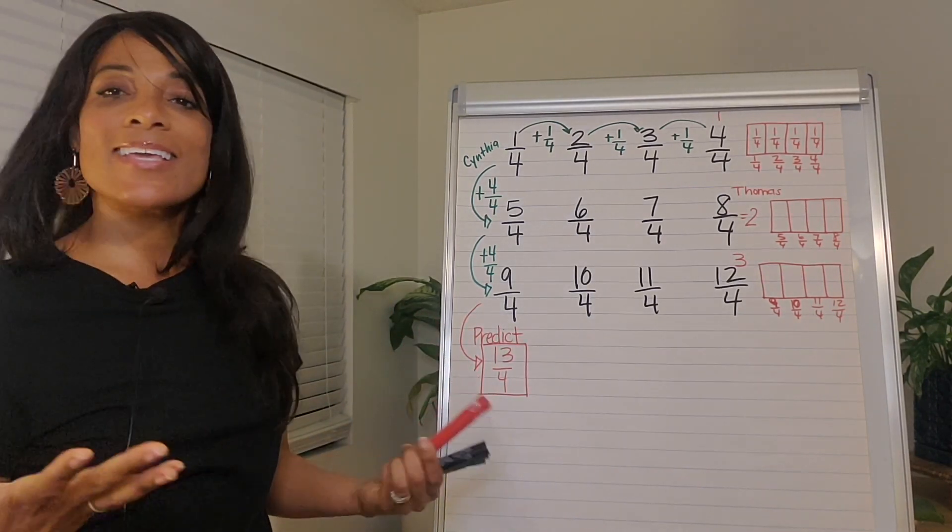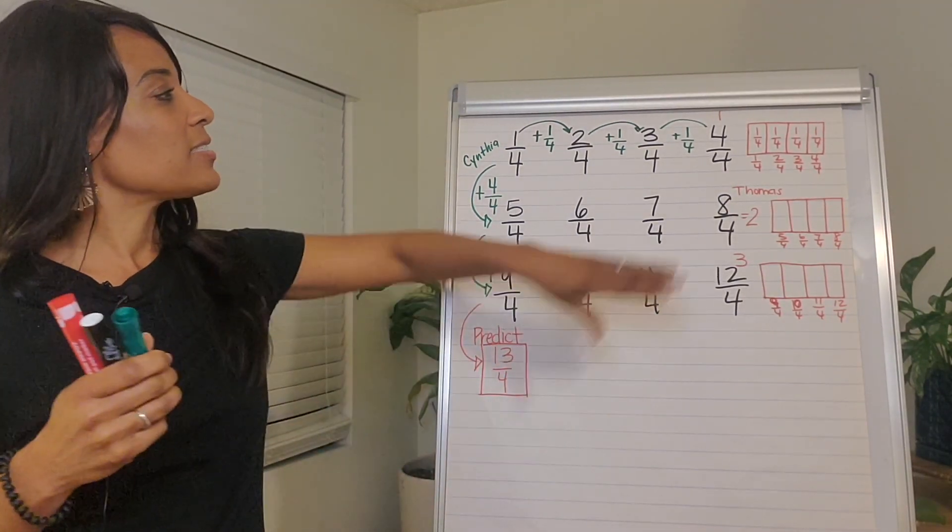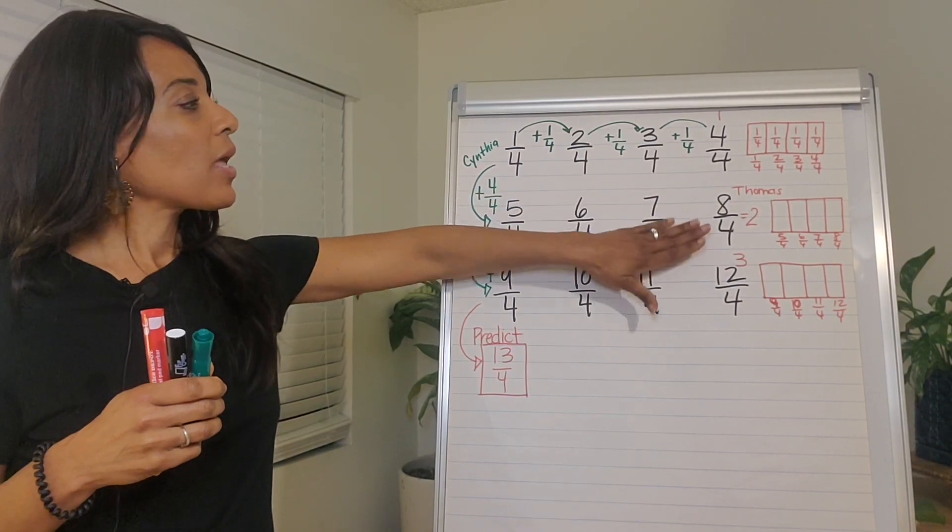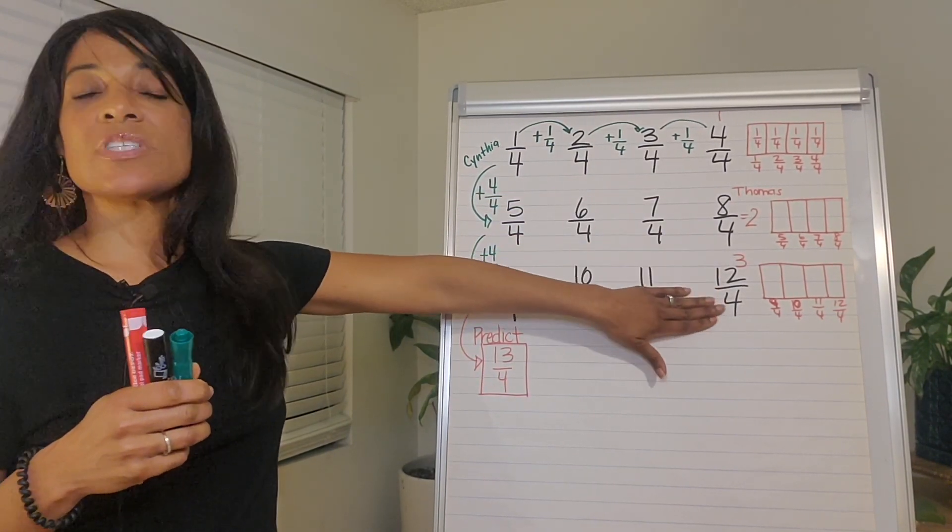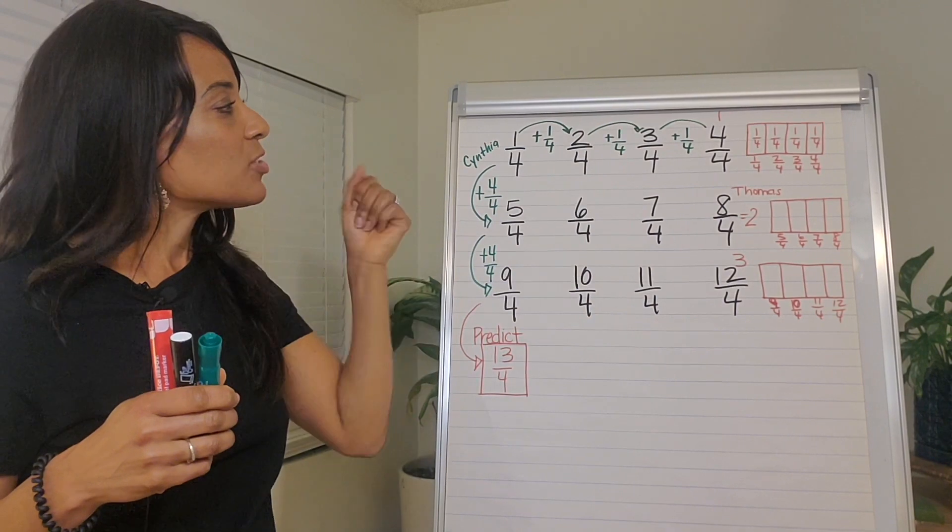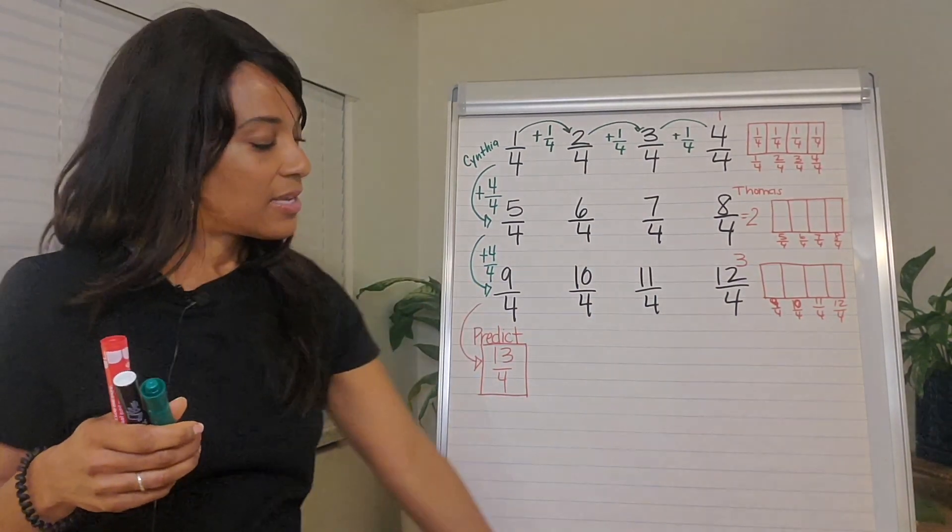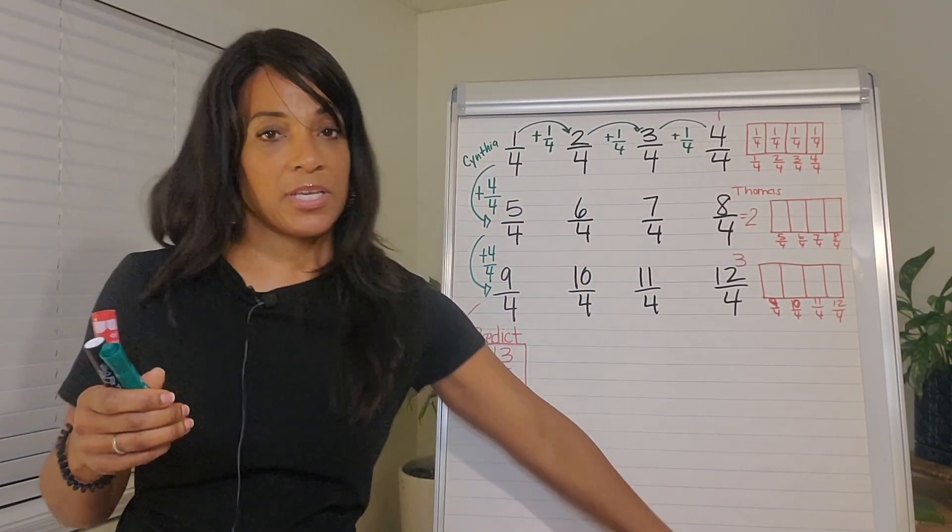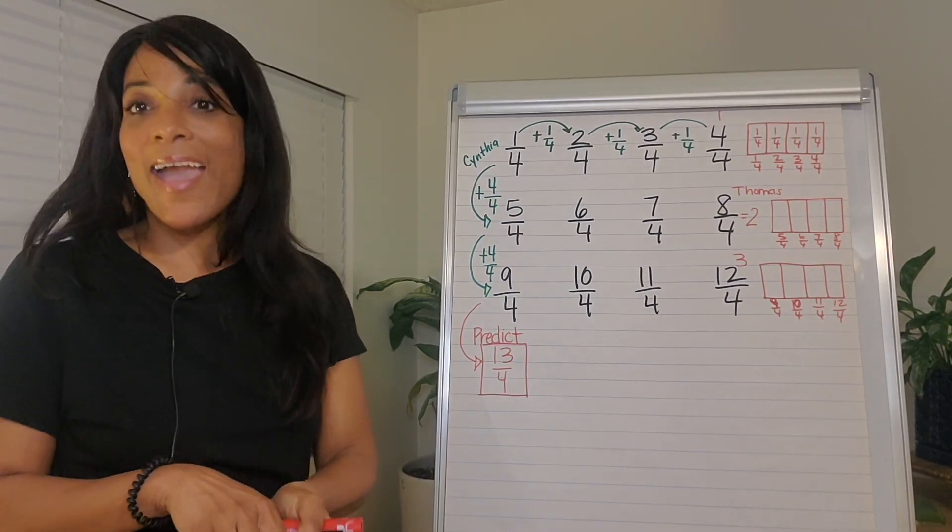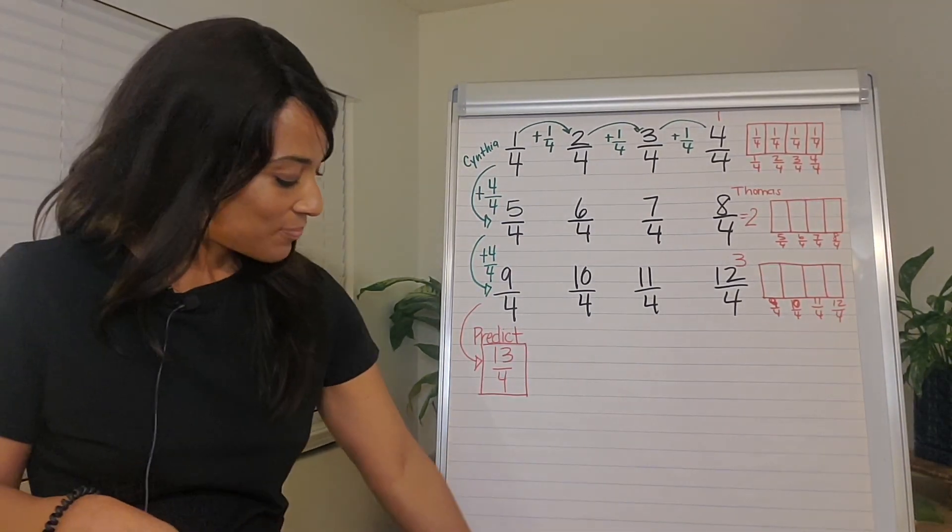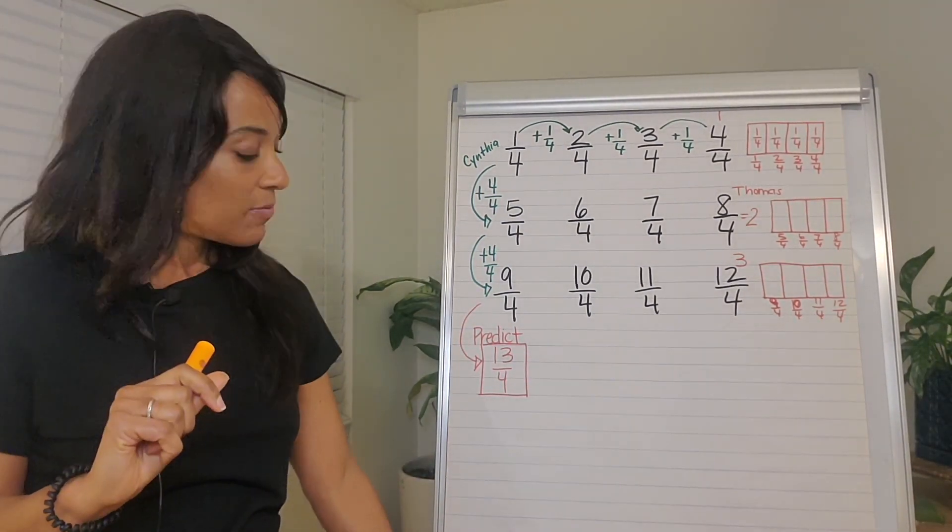So one of the things that kids tend to notice on day one is that four fourths is one whole, eight fourths is two wholes, 12 fourths is three wholes. So a question I'll ask the kids is if we have whole numbers here, do we have any halves? And then I'll be quiet and give them some think time.